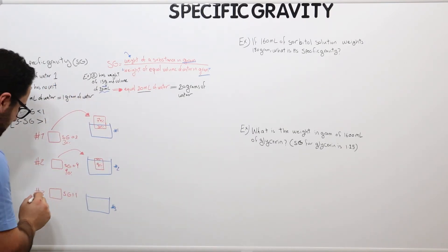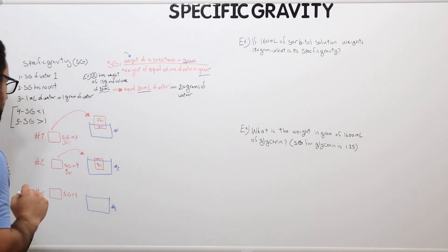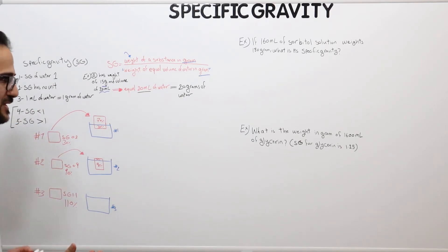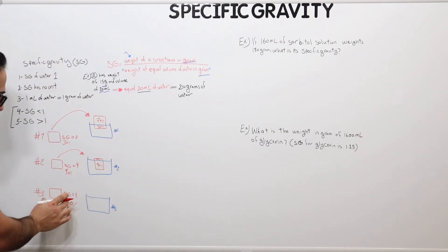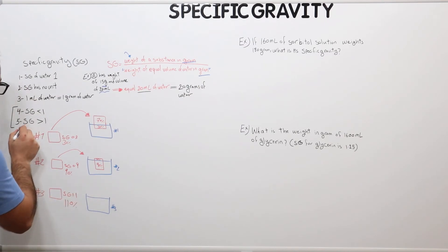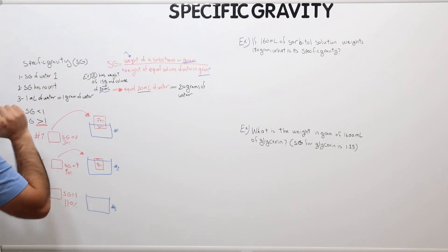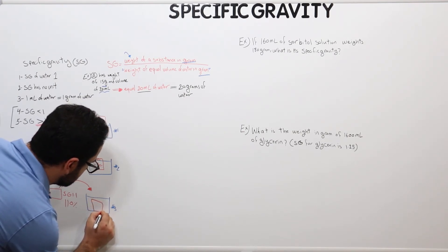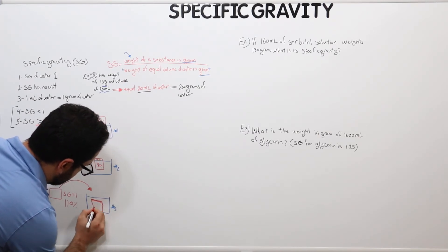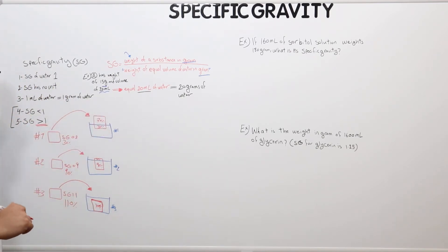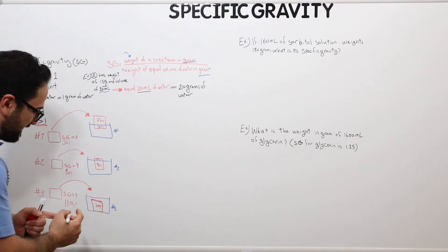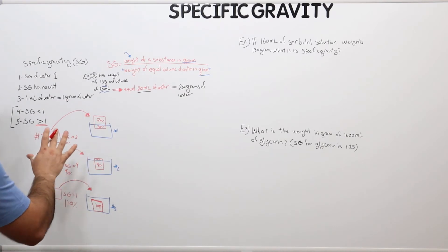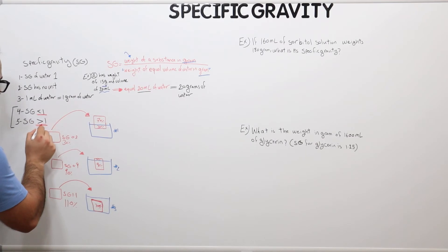Object number 3 has a specific gravity of 1.1, which would mean 110% submerged — but of course there's no such thing as 110%. What this means is that the object is heavier than water, so if I place it in bucket 3 it will sink all the way to the bottom. It will be 100% submerged inside the bucket.